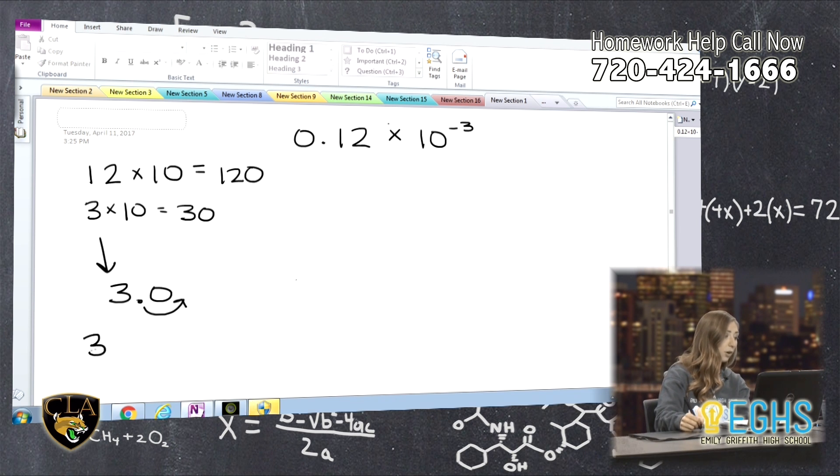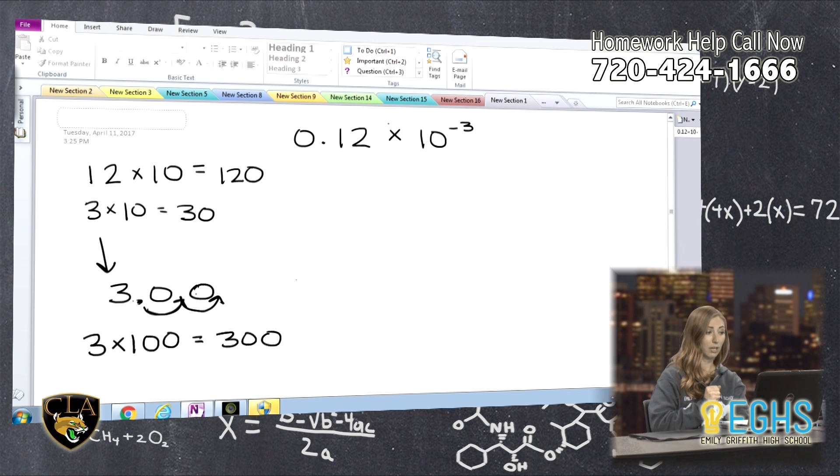You might have also heard, all right, when you multiply by 100, add two 0s. Well, it's not, again, that we're adding two 0s. It's that we are taking our decimal spot on this 3, and we're moving it over to the right two spots to give us 300.